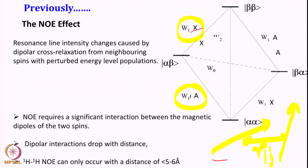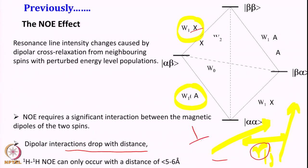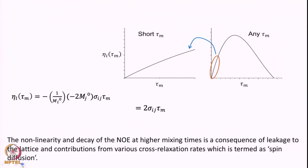Since it is interacting through space, it is a distance-dependent phenomenon. If R is the distance between these two spins, as distance increases, the dipolar interaction between them decreases and therefore the effect becomes lesser and lesser. Dipolar interaction drops with distance and varies as 1/R^6. It falls rapidly, so NOE effect can occur only up to 5 to 6 angstroms — after that there will be no NOE effect seen in general.